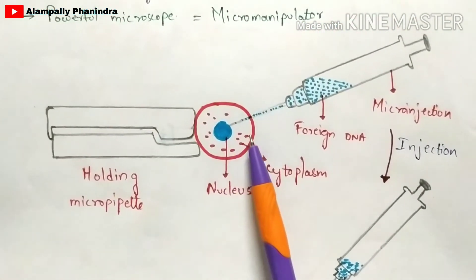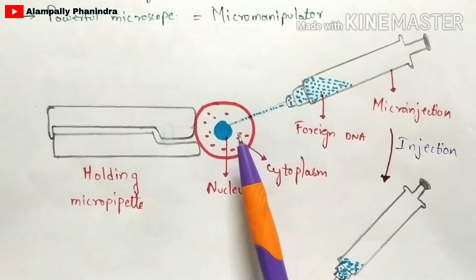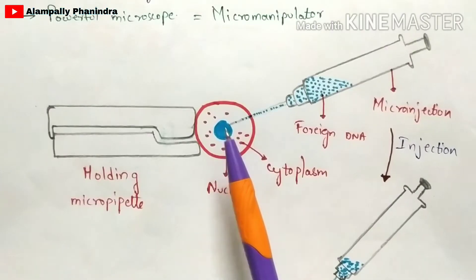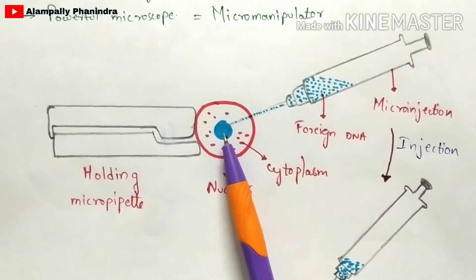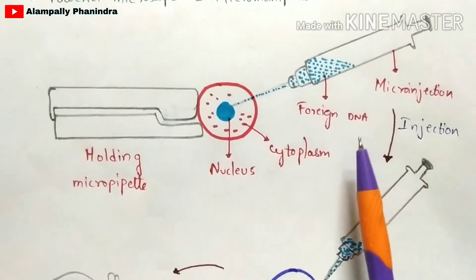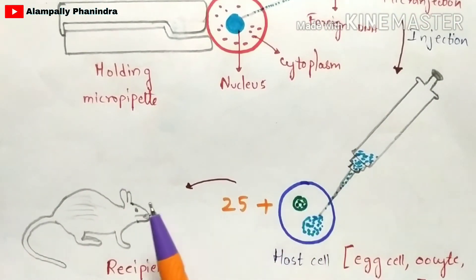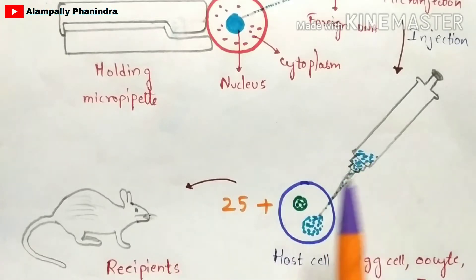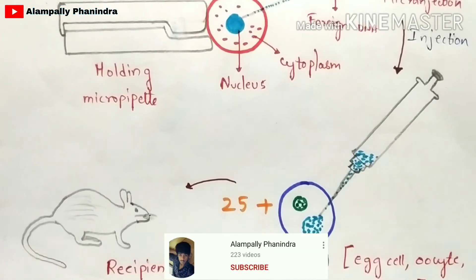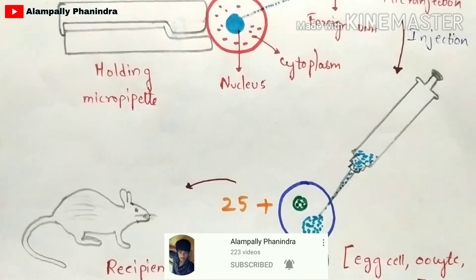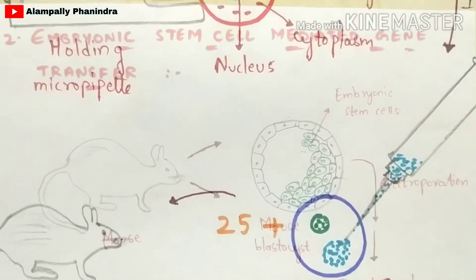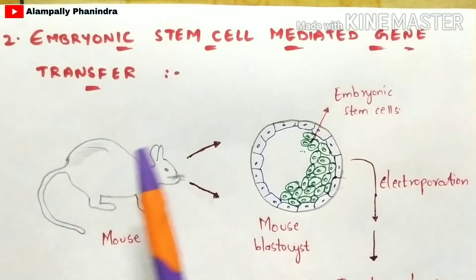To summarize DNA microinjection: first, extract the foreign DNA from the nucleus of the foreign cell; then inject that foreign DNA into the host cell; and finally implant the host cell into a recipient. This is the method behind DNA microinjection.